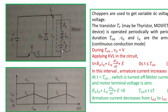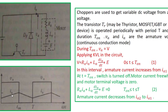The average inductor voltage over the complete period is zero. Whatever voltage develops across the inductor during the ON period is equal and opposite to the voltage developed during the OFF period, so the net average voltage becomes zero. We will use this expression in analyzing this circuit.